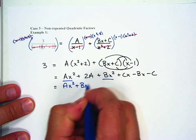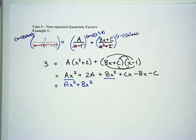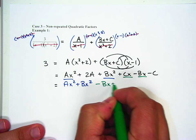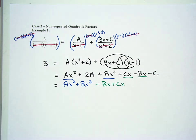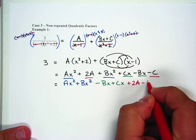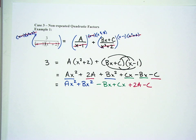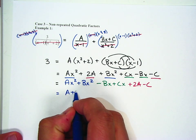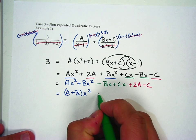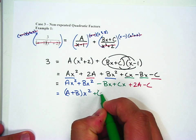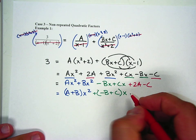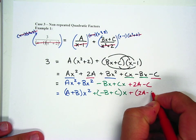And then C times negative 1 is negative C. So let's group our terms together. We have two x squared terms in Ax squared and Bx squared. So I'm going to write those out: Ax squared plus Bx squared. We have two x terms, and that's negative Bx plus Cx. And then we have two constant terms, 2A and negative C. So we'll say plus 2A minus C.